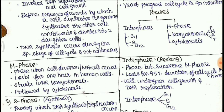Karyokinesis has four phases: prophase, metaphase, anaphase, and telophase. Karyokinesis is where the nucleus divides. Cytokinesis is where the cytoplasm divides.